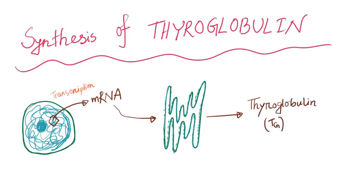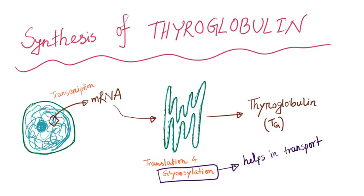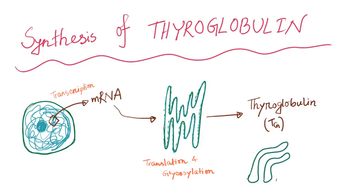Then, it enters the endoplasmic reticulum and becomes glycosylated. Here is a question, what is the purpose of converting thyroglobulin into a glycoprotein? The answer is, this mechanism facilitates the transport of thyroglobulin into follicular lumen. After that, it is packaged into small vesicles by Golgi body. These vesicles will fuse with the apical membrane of the follicular cell.